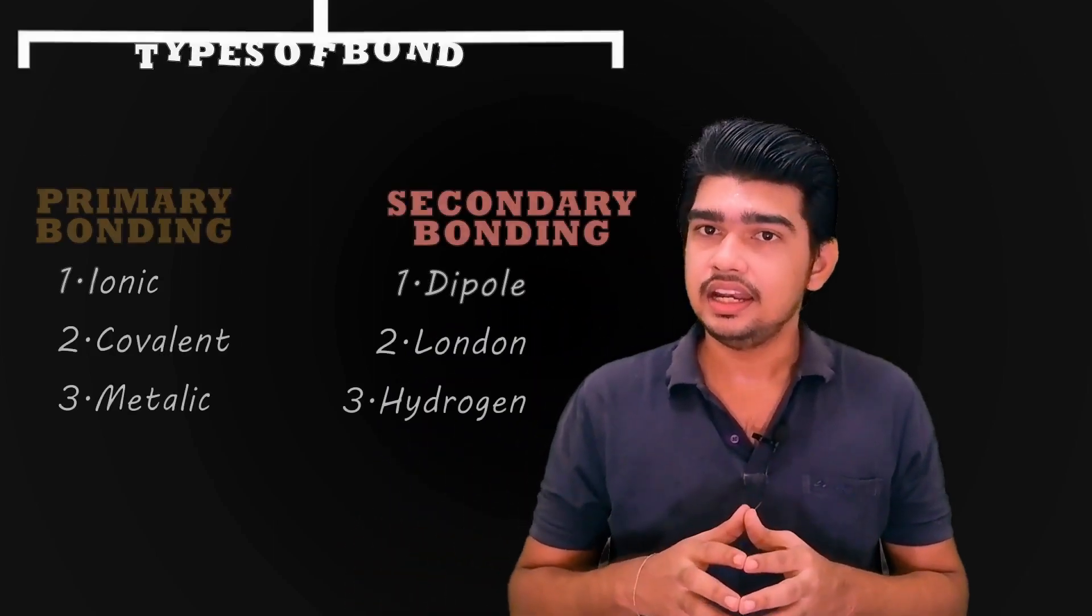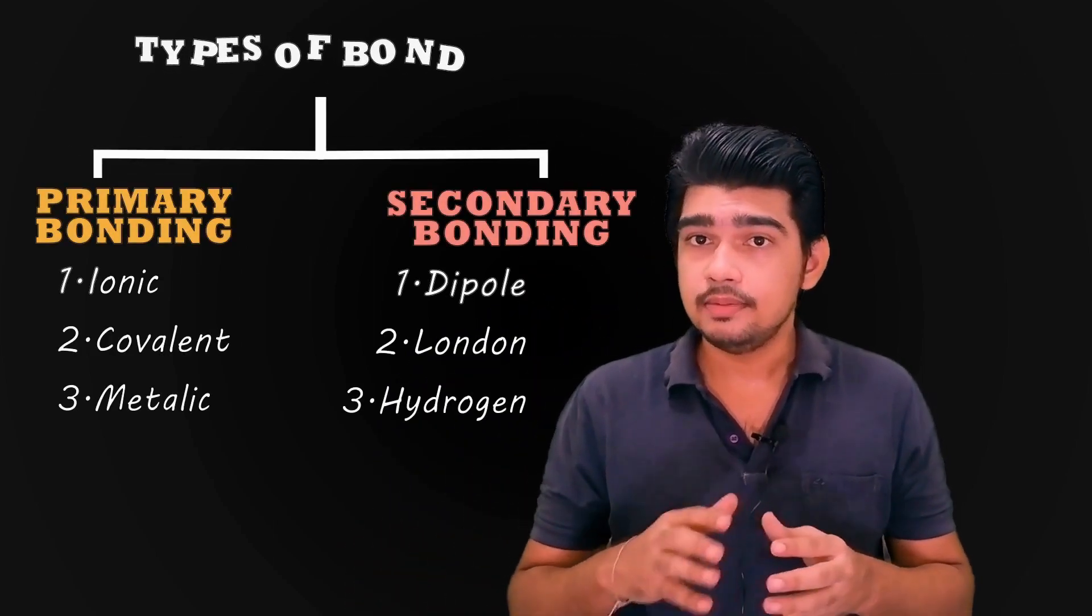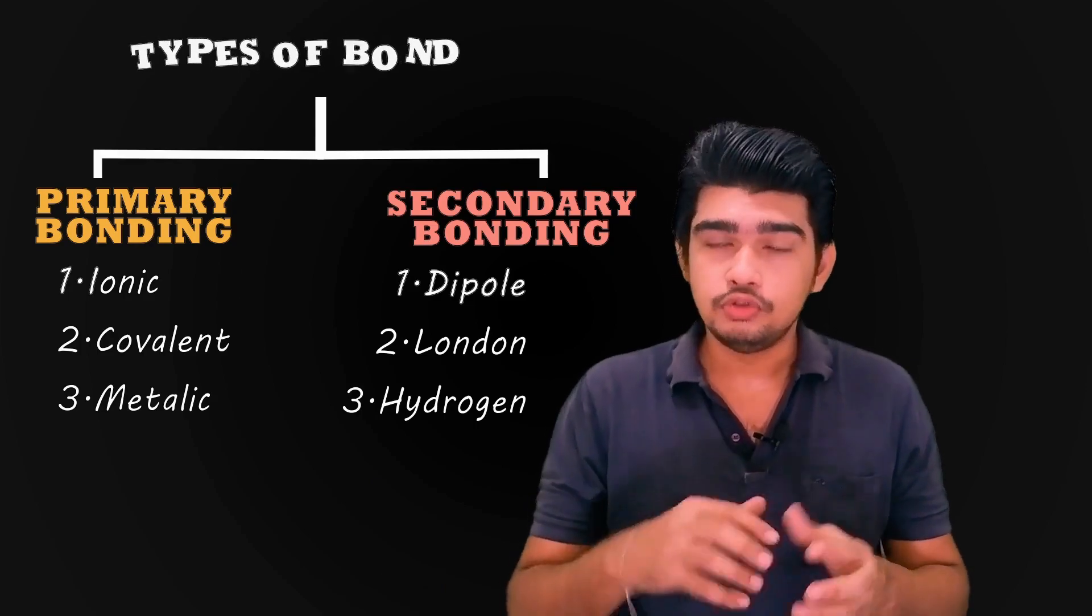Agreement is a bonding between two people which keeps them together. So, bonding is something that keeps two things together. Here we are going to see about types of bonding in chemistry that keeps atoms and molecules together.